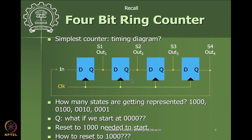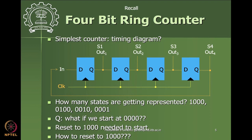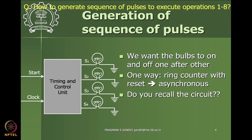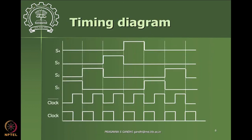It is a ring counter. In a ring counter you introduce a sequence like 1 0 0 0 - this state is 1 and all others are 0. In the next clock cycle that 1 moves to the next position, and with feedback this sequence loops continuously: 1 0 0 0, 0 1 0 0, 0 0 1 0, 0 0 0 1, for S1, S2, S3, S4. The timing diagram shows S1 lit first, then S2, then S3, then S4, and again S1 in a loop.